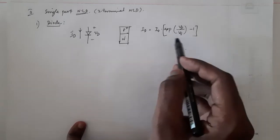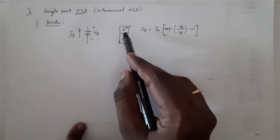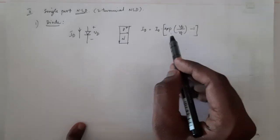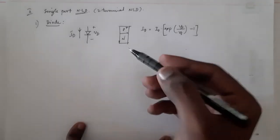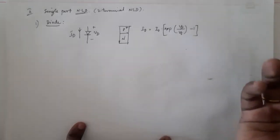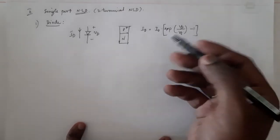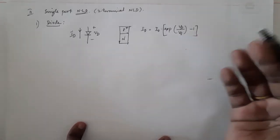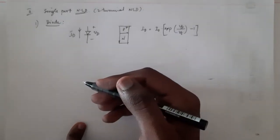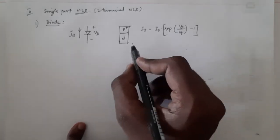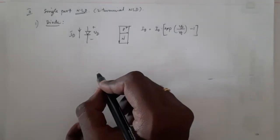The reason this relationship is exponential is that the current flow in a diode or any PN junction is mostly diffusion current. Diffusion current always has an exponential relationship because it depends on the gradient of carriers, and the carrier profile itself is exponential — taking the derivative of an exponential gives another exponential.